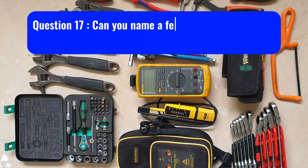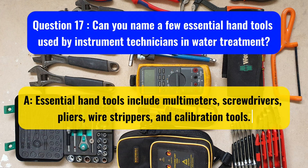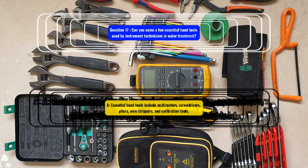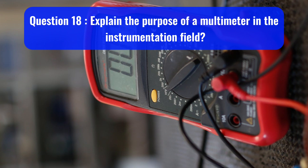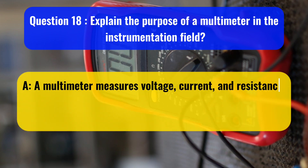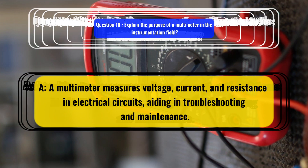Question 17: Can you name a few essential hand tools used by instrument technicians in water treatment? Essential hand tools include multimeters, screwdrivers, pliers, wire strippers, and calibration tools. Question 18: Explain the purpose of a multimeter in the instrumentation field. A multimeter measures voltage, current, and resistance in electrical circuits, aiding in troubleshooting and maintenance.